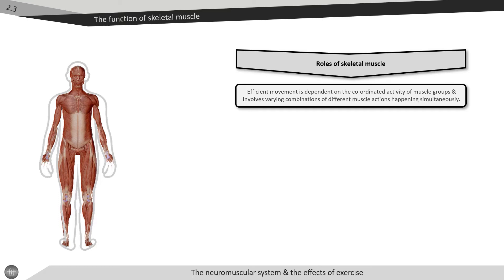Efficient movement is dependent on the coordinated activity of whole muscle groups and involves varying combinations of different muscle actions happening simultaneously. During any movement, different muscles can be working in one of four different ways including being the agonist, antagonist, synergist, or fixator.